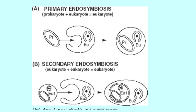Primary endosymbiosis refers to the engulfment of a bacterium by another free-living organism. Secondary endosymbiosis refers to the engulfment of the product of primary endosymbiosis itself by another free-living eukaryote. Secondary endosymbiosis has occurred several times and is the reason for some extremely diverse groups of algae and other eukaryotes, as well as the unique topography of plastid membranes.